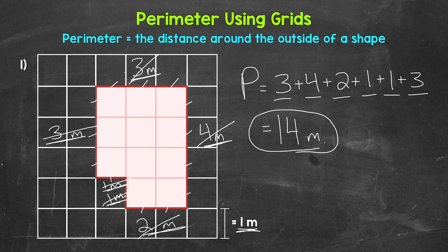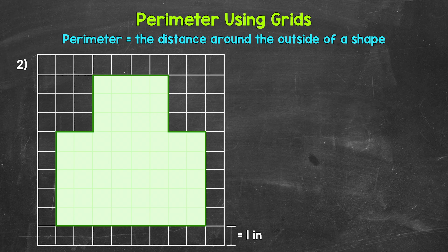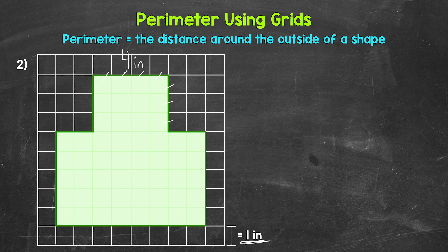Let's try another example and move on to number two. For number two, we are working with inches — each side of a square is one inch. To find the perimeter, we need to add all of the side lengths. Starting up top, we have one, two, three, four inches — so four inches. Then the right side: one, two, three inches.